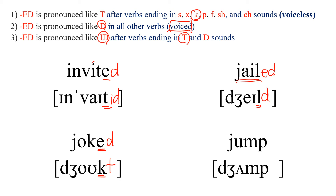Next one: JUMP. This ends in a consonant, so we just add ED to make it past. This is a P ending, which is one of the voiceless sounds. So we add T and read: JUMPED.